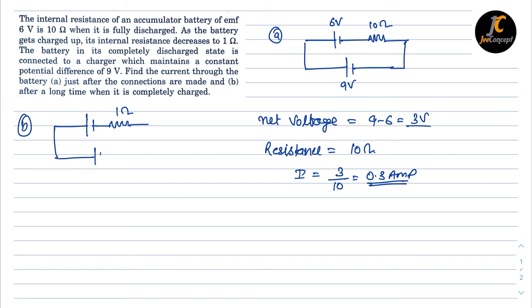Again, the supply voltage is 9 volt and this battery is 6 volt. So again, the net voltage remains the same, that is 3 volt, and this time the resistance is only 1 ohm.